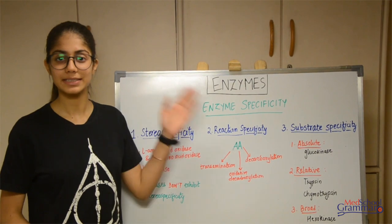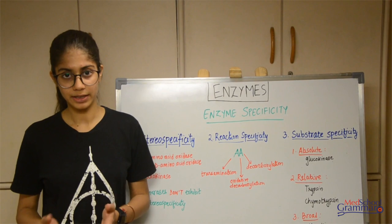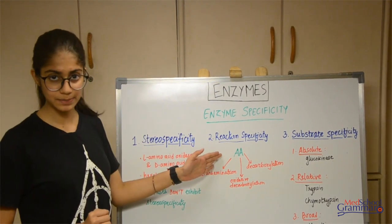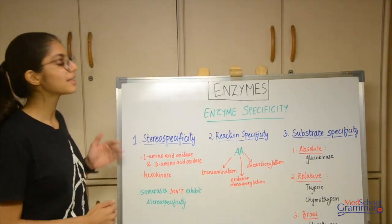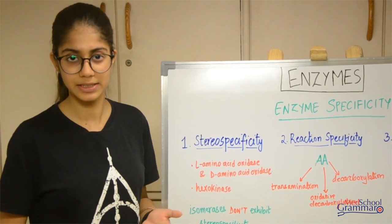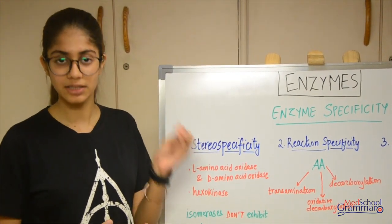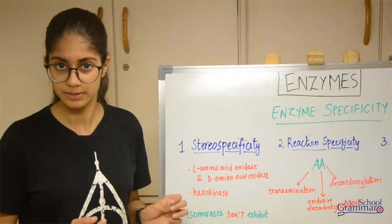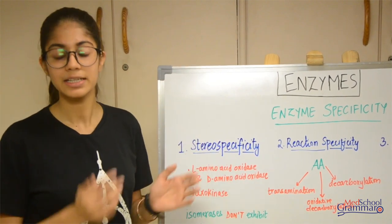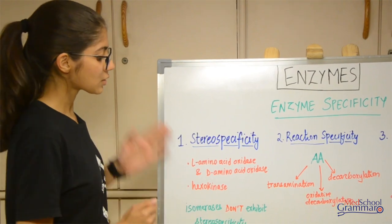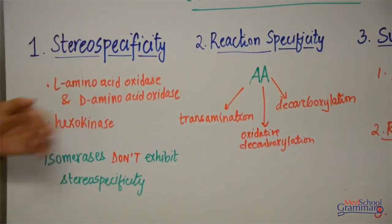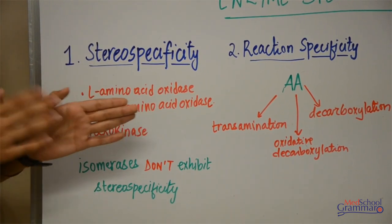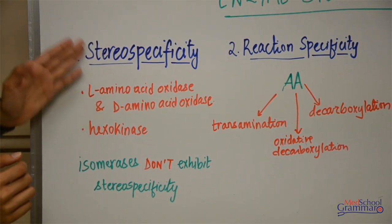Let's move on to our next topic, that is enzyme specificity. There are three different types of specificities in enzymes: stereo specificity, reaction specificity, and substrate specificity. Stereo specificity, which is also called optical specificity — basically when the substrate has the same molecular formula but a different structural configuration, it is called stereoisomerism. Enzymes having stereo specificity differentiate between these stereoisomers. For example, L-amino acid oxidase and D-amino acid oxidase act on L-amino acids and D-amino acids respectively — L-amino acid oxidase would never act on a D-amino acid.